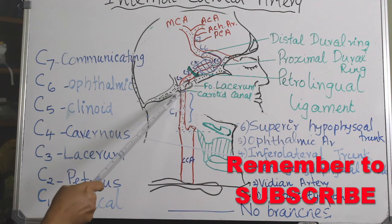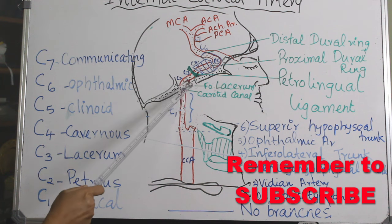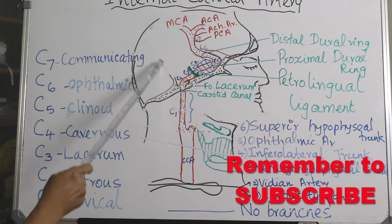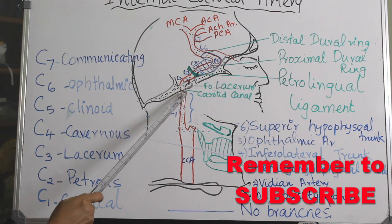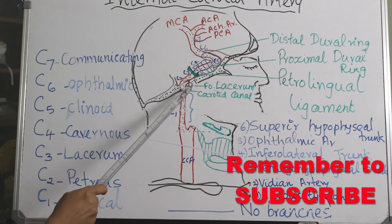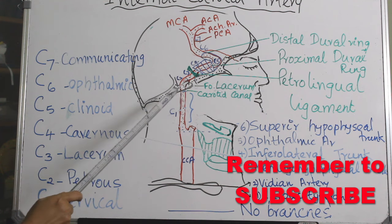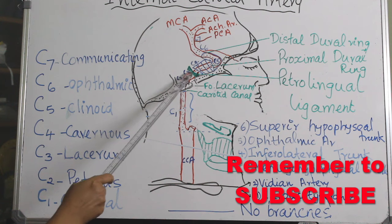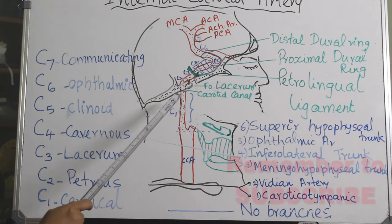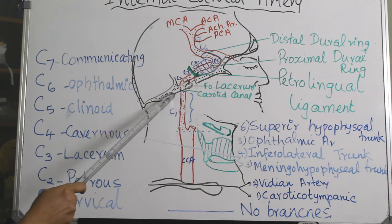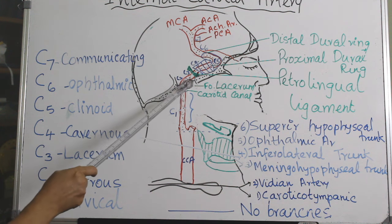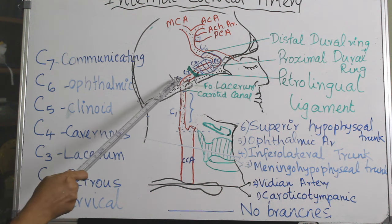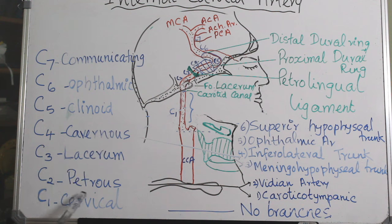C2 is the petrous segment, from the entrance to the carotid canal up to the posterior edge of the foramen lacerum. The ICA enters the cranial cavity through the carotid canal — it does not go through the foramen lacerum, but passes over it. So from the entrance to the carotid canal to the posterior edge of foramen lacerum is the C2 or petrous segment.